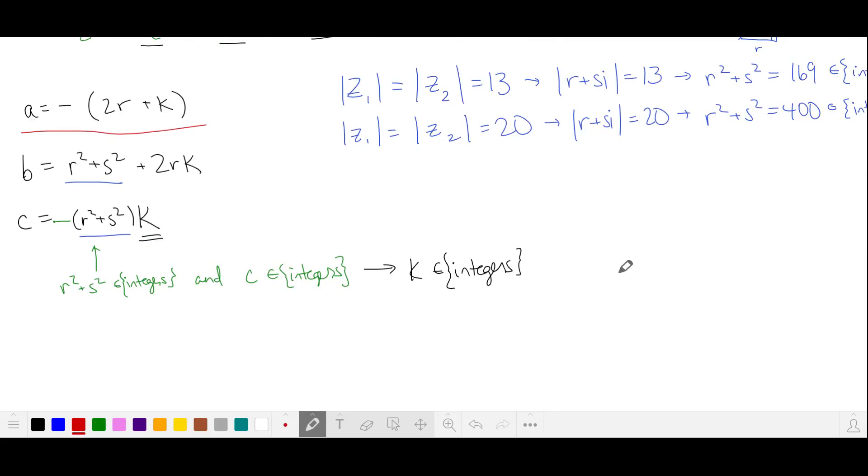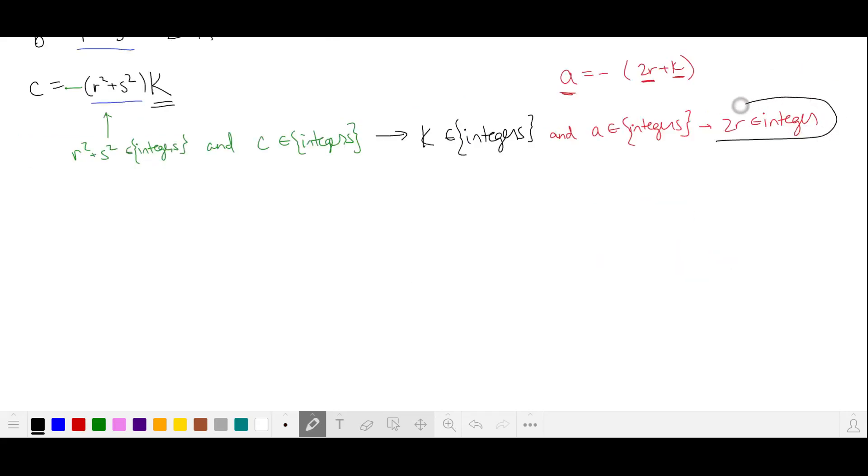Looking up here at this first equation for a, if k is an integer and a is an integer, then we have this other term 2r is an integer. With this restriction, let's see how many polynomials we can create.